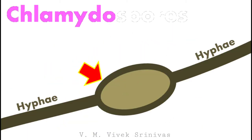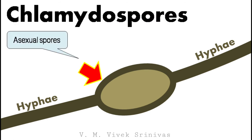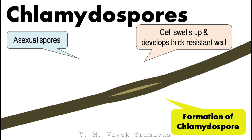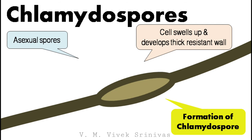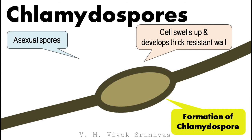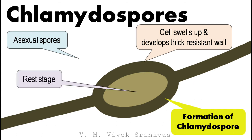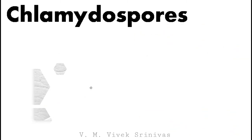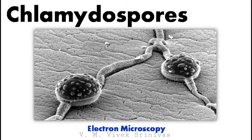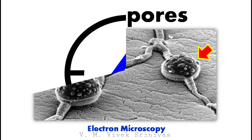Next, chlamydospores. This is also an asexual spore. In the formation of a chlamydospore, first the cell gradually swells up and develops a thick resistant wall around it. This is a resting stage where the spores develop due to nutritional stress. This electron microscopy image shows the chlamydospore where you can notice the cell swells up and develops a thick resistant wall.